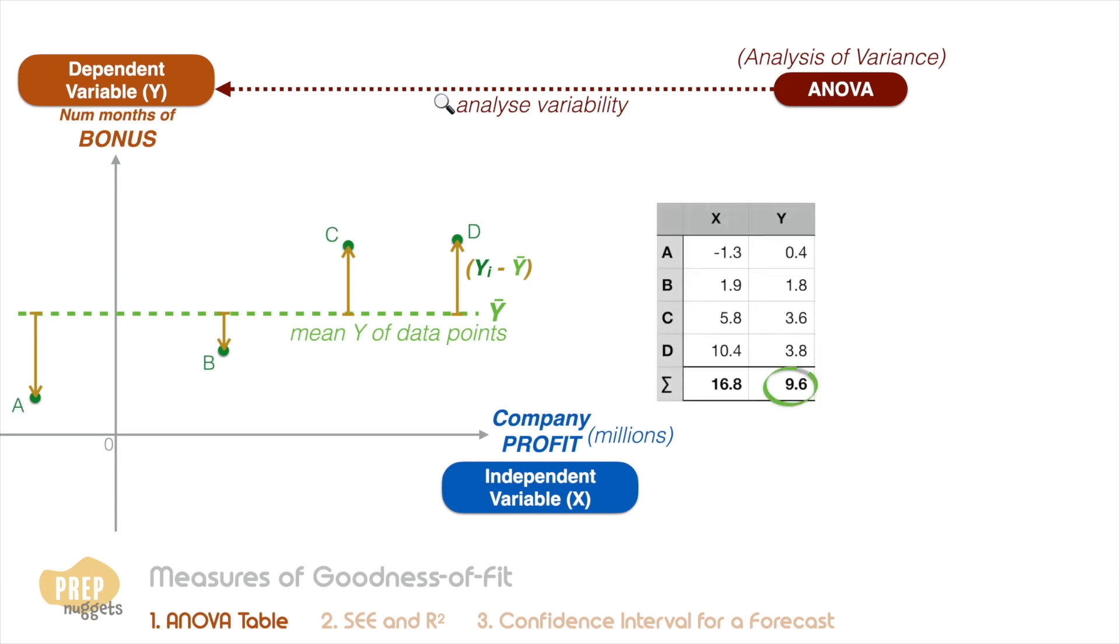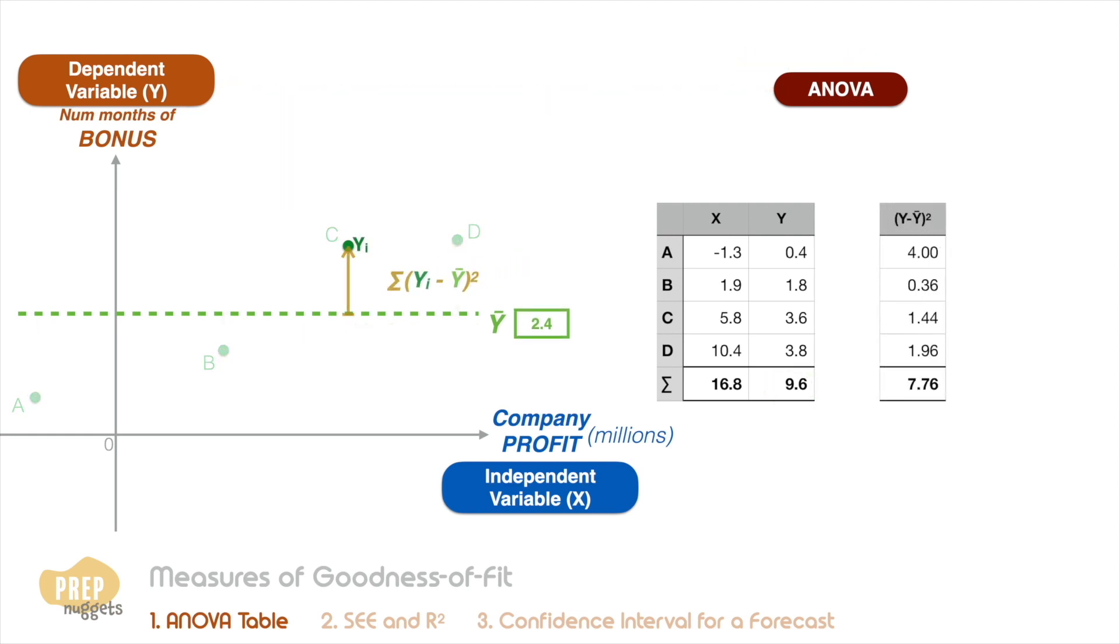So if the mean number of months of bonus is 2.4 months, we can measure how variable the data points are from the mean by summing the squared differences between the actual values and the mean. We call this the total sum of squares, or SST in short.